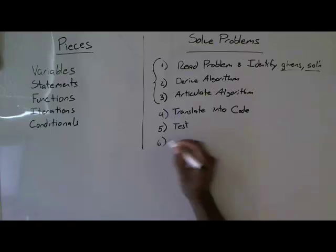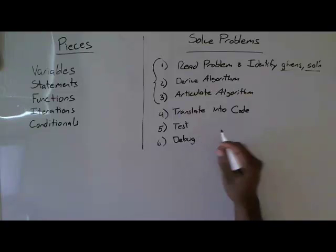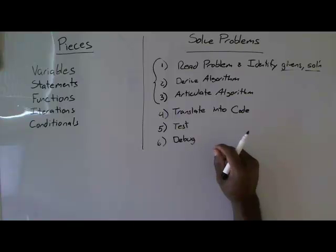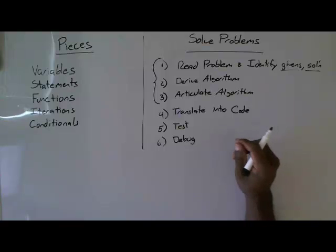And then six is debug. The thing about computer science is you're not going to get it right the first time. And that's okay. If you do get it right the first time, great. But for most problems, computer scientists, when you're writing code, when you're doing this translation, you don't necessarily get it right the first time.